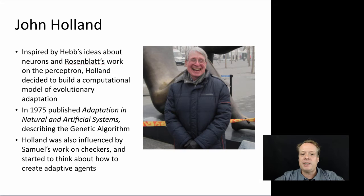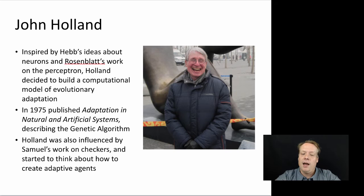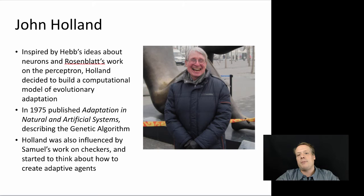Based upon his thoughts, he decided to think about the evolutionary adaptive process. In 1975, he published the book Adaptation in Artificial Systems, which essentially laid the groundwork for the genetic algorithm. The genetic algorithm — which I'll show an example of in the next video lecture — takes a population of solutions to a problem, evaluates them, and creates a new population using evolutionary principles, much the same way evolution works in biological systems. Holland really founded the field of genetic algorithms in many senses.